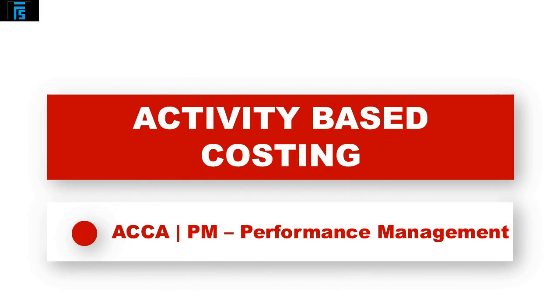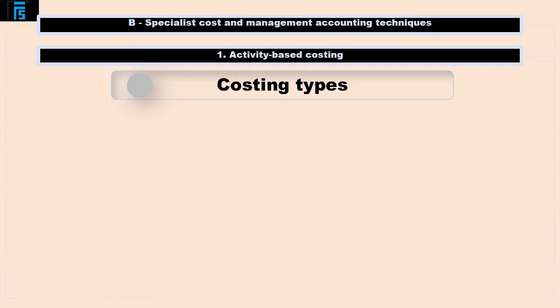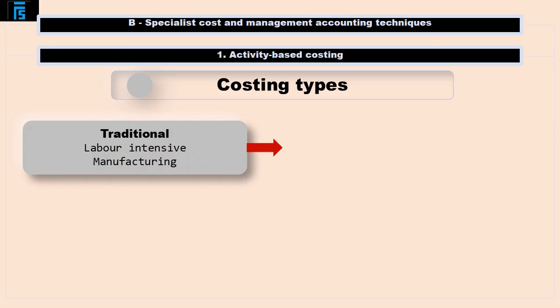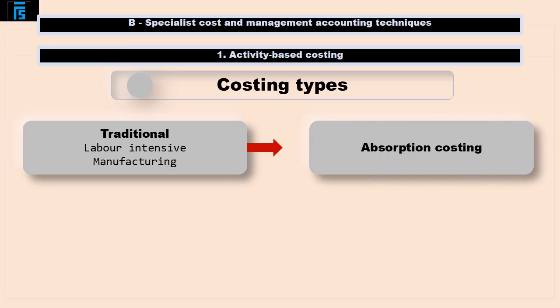This presentation covers the management accounting technique of activity based costing. Traditionally, manufacturing was labour intensive. It made sense therefore to trace overheads to products, or to absorb based on the number of labour hours worked or the number of units produced. Absorption costing was used for this.